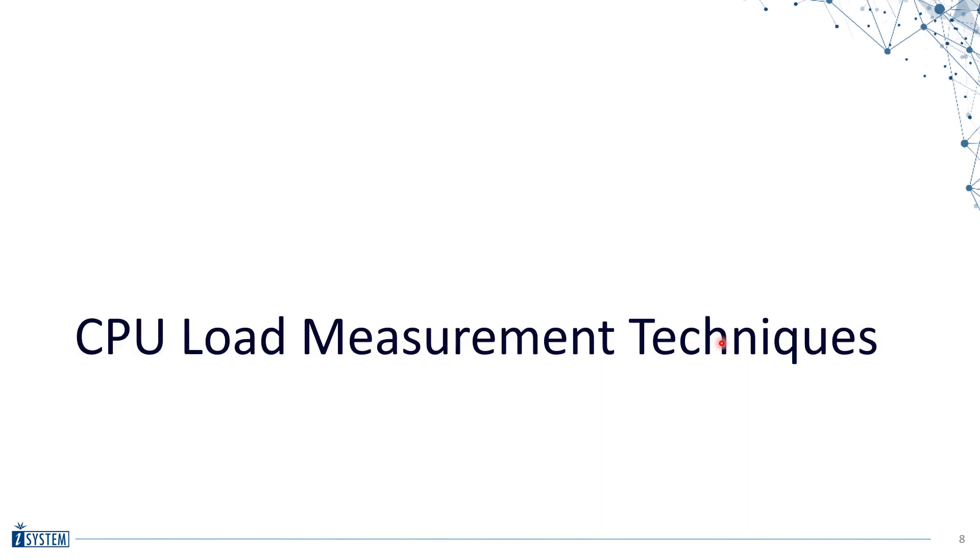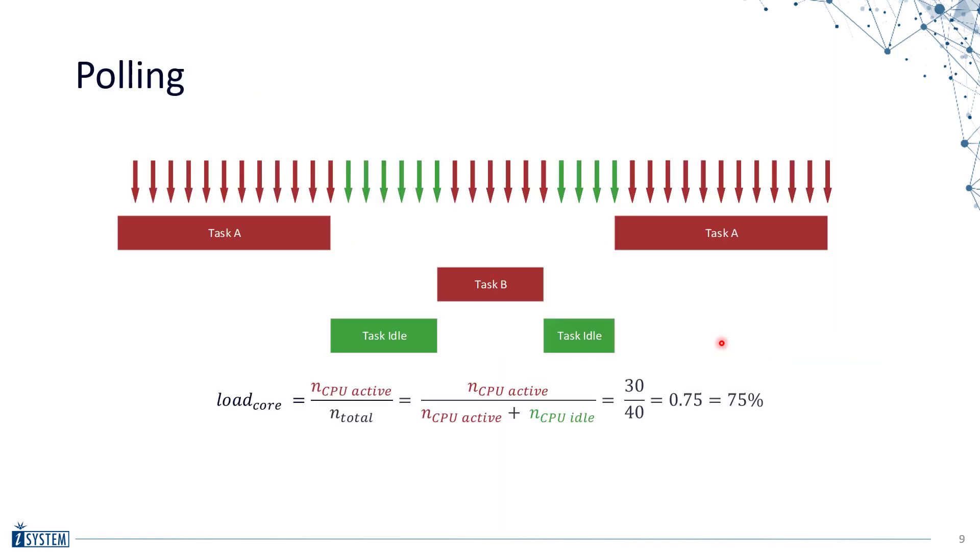So how can we measure this data? How can we measure the CPU utilization? The first approach is called polling. The idea of polling is to read out a certain variable, the so-called running task variable and the running ISR variable over time periodically. Those two variables include the information about the currently running task and ISR. By constantly polling, we know when certain tasks and when the idle tasks are being executed. For example, in this case, we poll 40 times in total and 30 times the CPU is active, meaning a task is running, and 10 times the CPU is idle. By dividing 30 by 40, we get again our load of 75%.